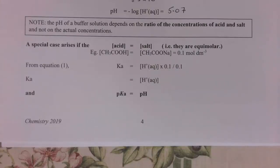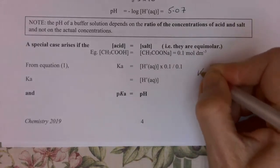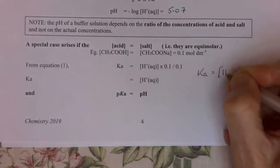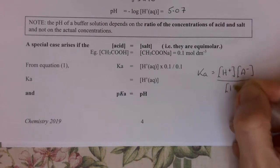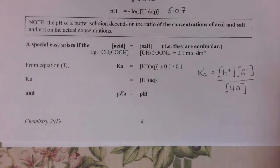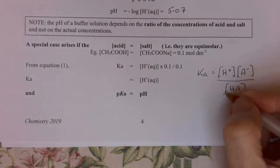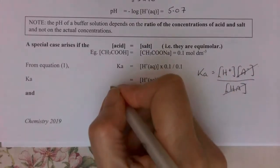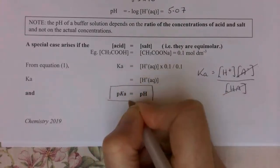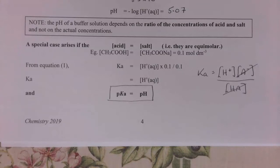A very special case arises when the concentration of the acid equals the concentration of the salt — in other words they're equimolar. In the Ka expression, Ka = [CH₃COO⁻][H⁺] / [CH₃COOH], if the acid and salt concentrations are the same number they cancel out, and you get Ka equals [H⁺]. Under this special case, the pKa value equals the pH. We're going to need that later when we talk about weak acid titration curves.